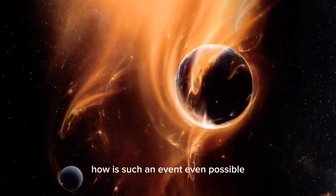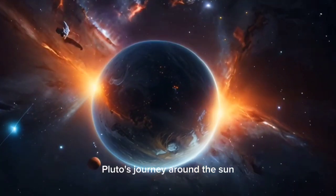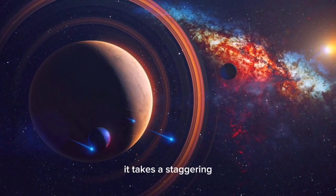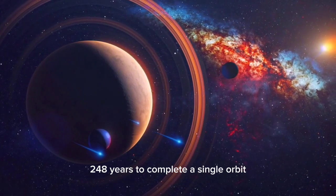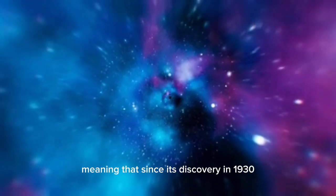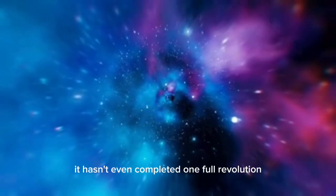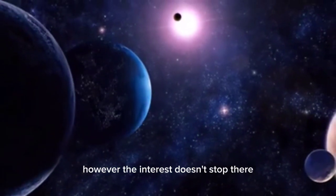How is such an event even possible? Pluto's journey around the Sun is unlike any other planet in our solar system. It takes a staggering 248 years to complete a single orbit, meaning that since its discovery in 1930, it hasn't even completed one full revolution. However, the interest doesn't stop there.